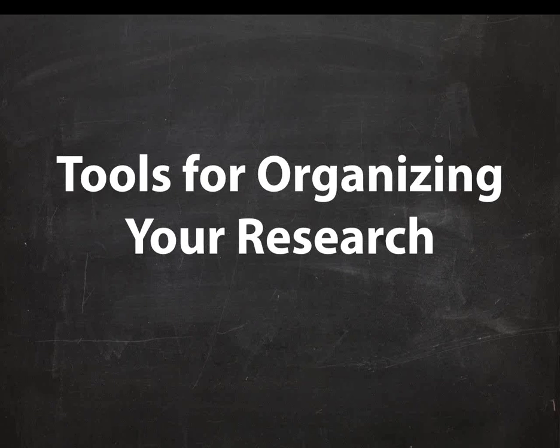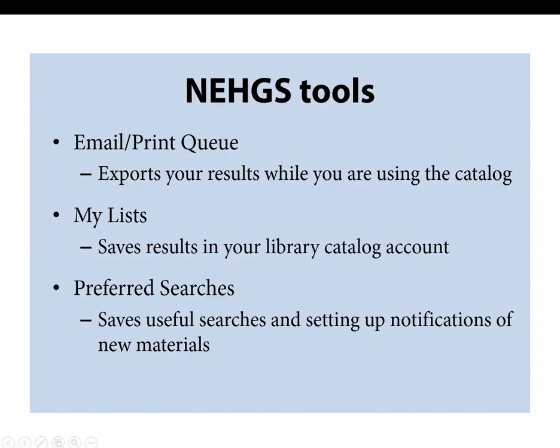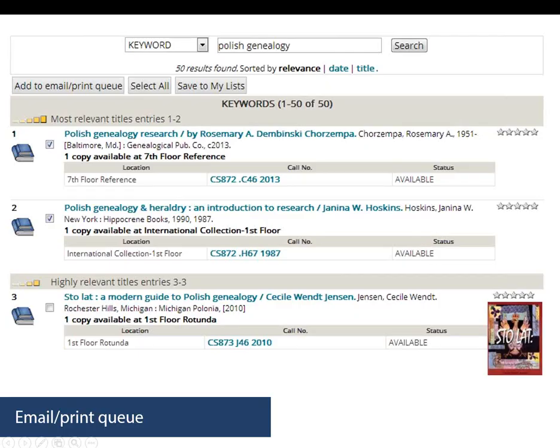You've done some searching in a library catalog — how do you save what you've done and organize your results? Most catalogs will have some tools that help by letting you make lists, email records, and create accounts to save your research results. The tools in the NEHGS catalog are the Email/Print Queue, My Lists, and Preferred Searches. The Email/Print Queue allows you to email, print, or save records while you are working in a catalog session. This doesn't require any library catalog login, but the information is only saved for the current session.